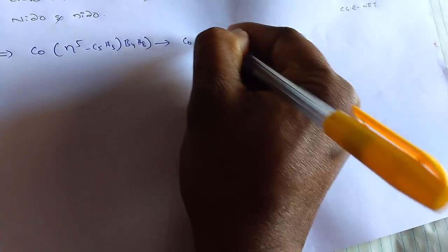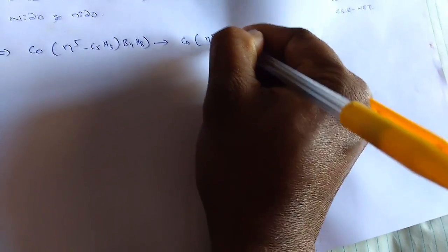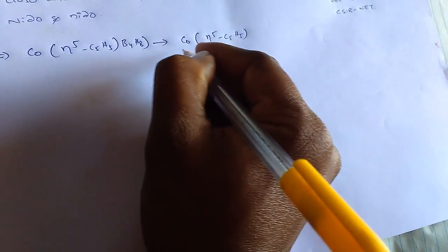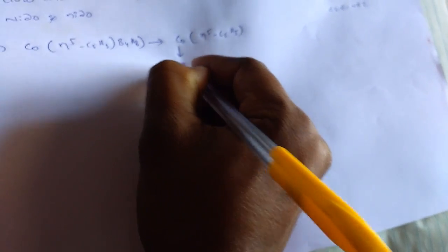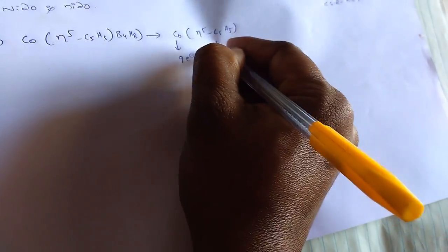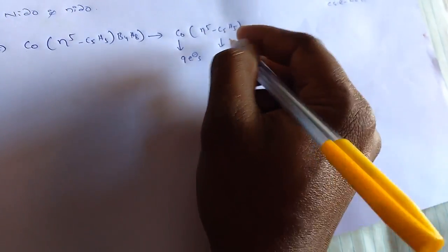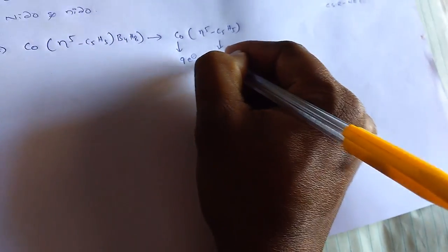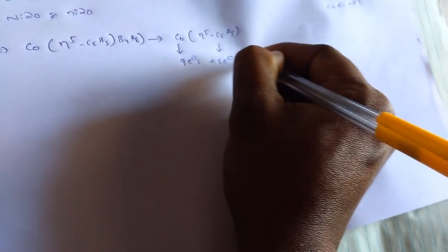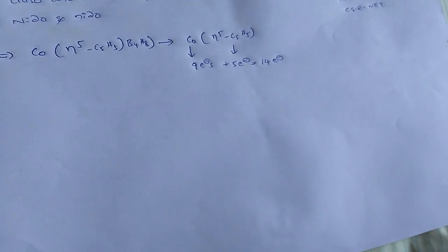In this complex, first take cobalt eta five C5H5. The cobalt has valence electrons 9. From this eta five C5H5, 5 electrons. So, totally 14 electrons, 14 valence electrons.